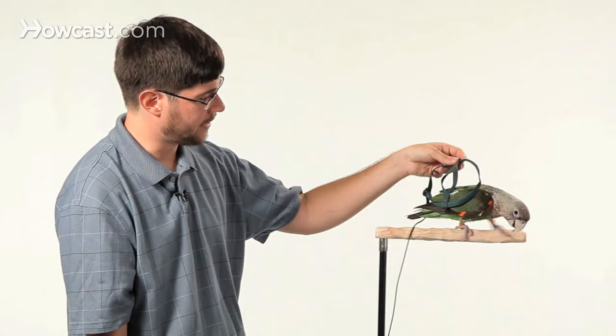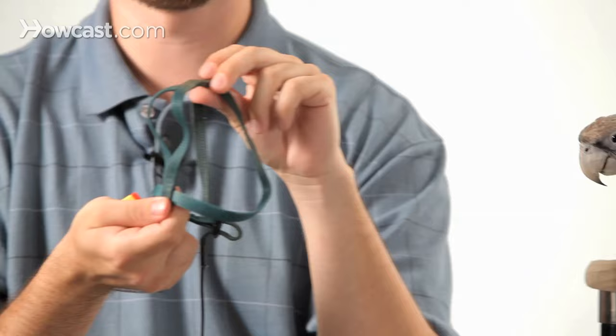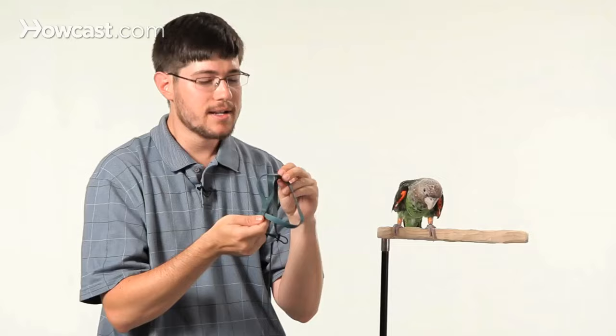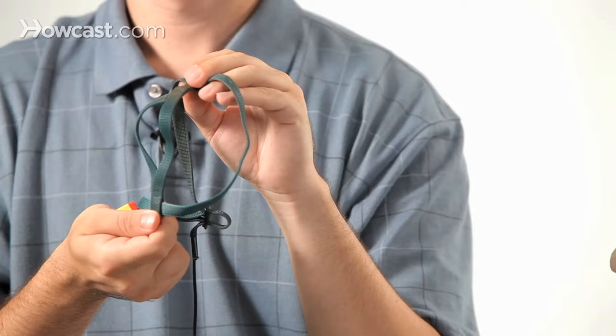Once your parrot is comfortable with the harness material being on or near his body, start teaching it to put its head through the collar. This is the secret to wearing the harness: getting the bird to feel like it's participating and volunteering rather than having the harness forced on it.